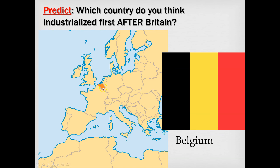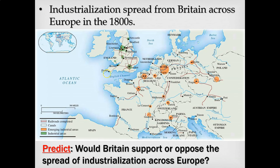Belgium is where the Industrial Revolution goes next after Britain. One of the reasons it went there is that some British industrialists had moved to Belgium and brought those ideas and technologies with them. Once it goes from Britain to Belgium, industrialization begins to spread all across the continent — factories start popping up in France, Germany, Denmark, Italy, and so forth.